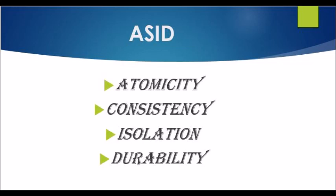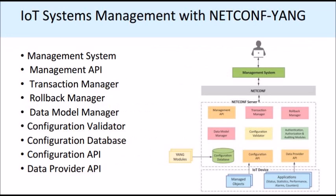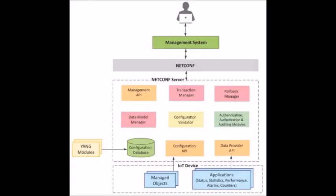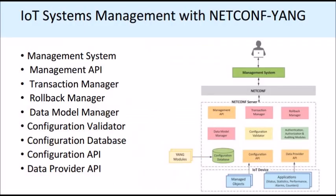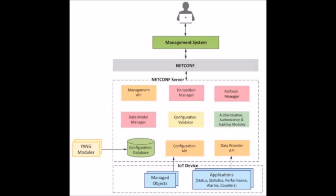Then we have the Rollback manager. The Rollback manager is responsible for generating all the transactions necessary to roll back a current configuration to its original state. After that is the Data Model manager. The Data Model manager keeps track of all the YANG data models and the corresponding manager objects, as well as the applications which provide data for each part of the data model.